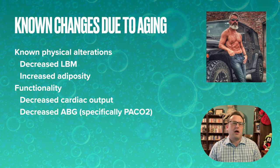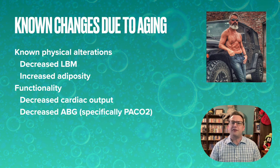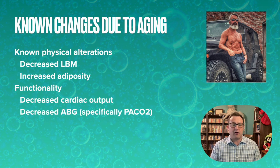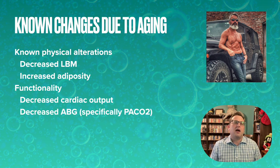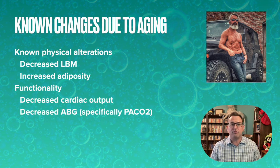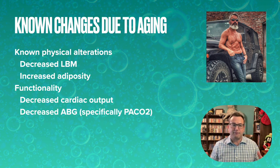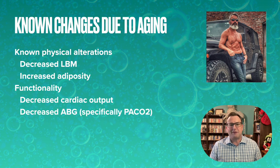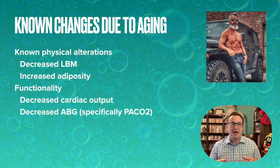Why? Most of it's due to the changes in composition and function. We know for a fact that changes happen as a body gets older — not just gray hair. Decreased lean body mass occurs as one ages as well as increased adiposity. You can tell from our model that decreased lean body mass is a severe problem in older people. This is a trend — you can fight these changes, as he clearly has done.